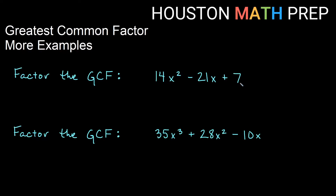Welcome back everyone to some more examples with greatest common factor from algebra. Our first problem is 14x squared minus 21x plus 7. Remember what we'll do is go through each term — terms are separated by add and subtract, so here I have three terms. We'll focus on the coefficient GCF and then the GCF of any variables. Looking at 14, 21, and 7, the greatest common factor of those is 7.